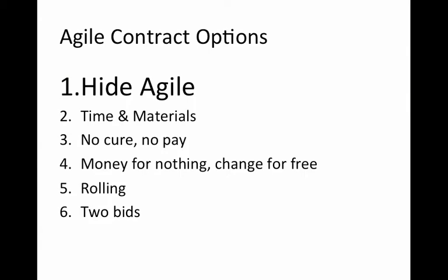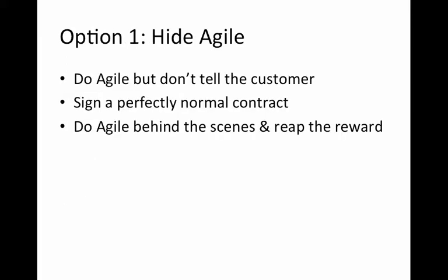Don't tell the customer you're doing it. Sign a perfectly normal contract. Behind the scenes, do Agile — working iterations, whatever you want. After all, you're a black box. Why should the customer care? If it says a set number of features for a set price or a fixed amount of time, and you've signed up to that, and the customer signed up to that, what difference does it make what's happening behind the scenes?